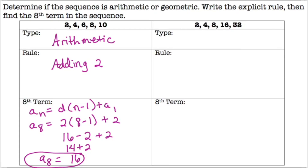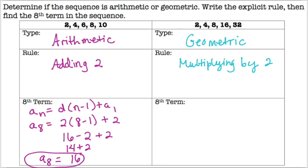On the right hand side we have 2, 4, 8, 16, 32. That is geometric because it's multiplying by 2 each time. We can verify: 4 minus 2 is 2, but 8 minus 4 is 4, so it's not arithmetic. Then 4 divided by 2 is 2 and 8 divided by 4 is also 2, so we know it's geometric — multiply by 2.